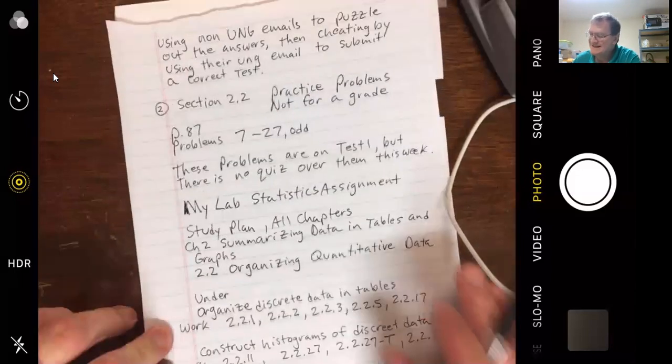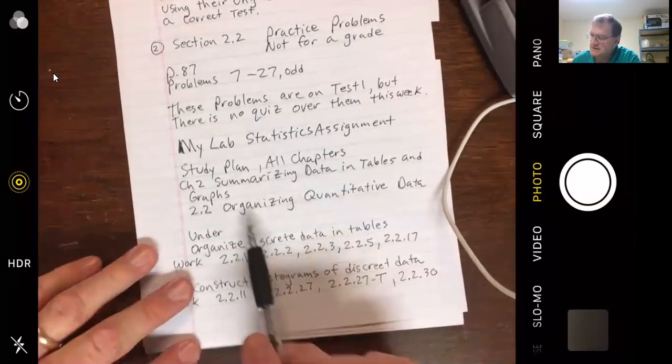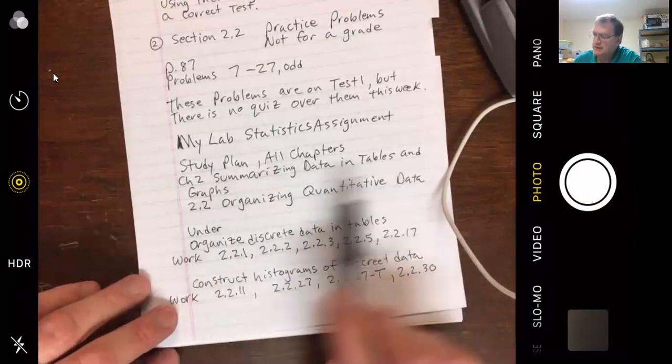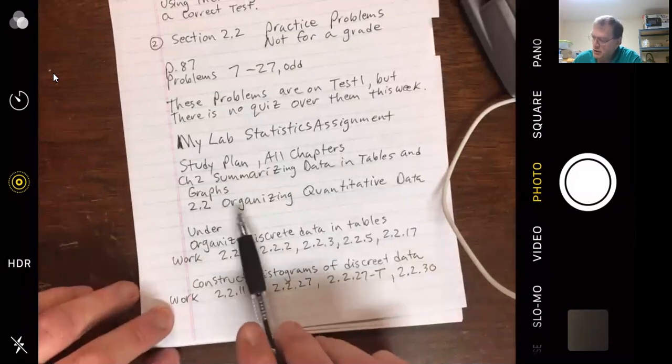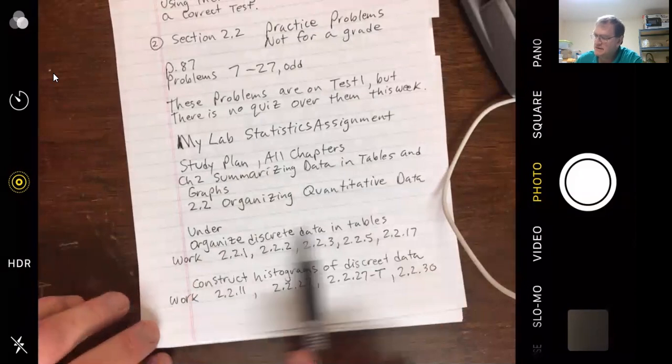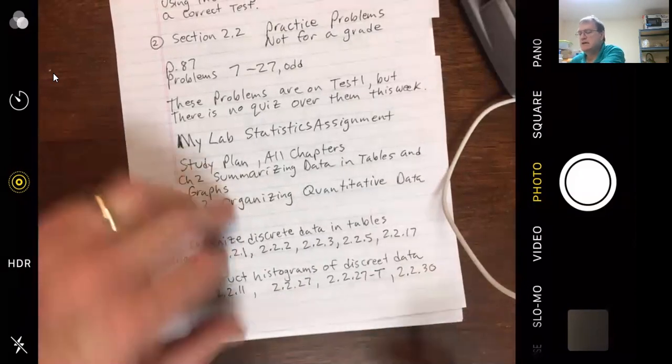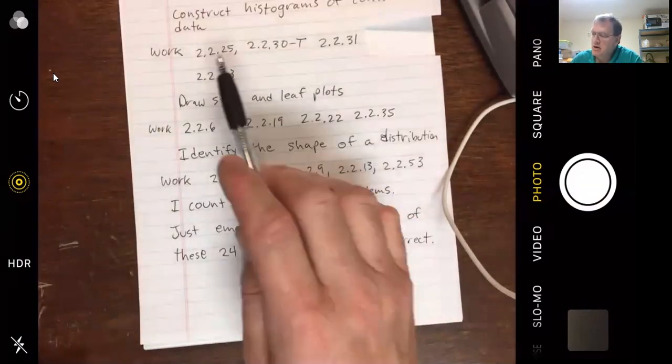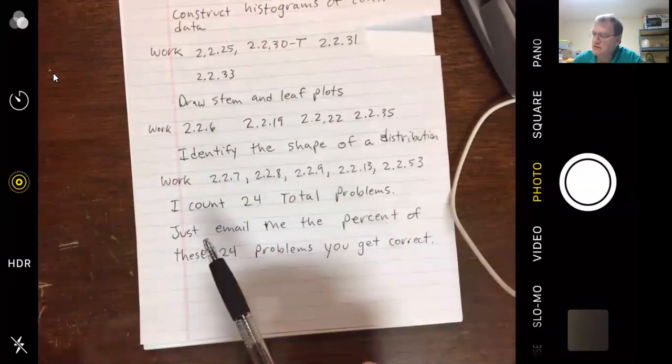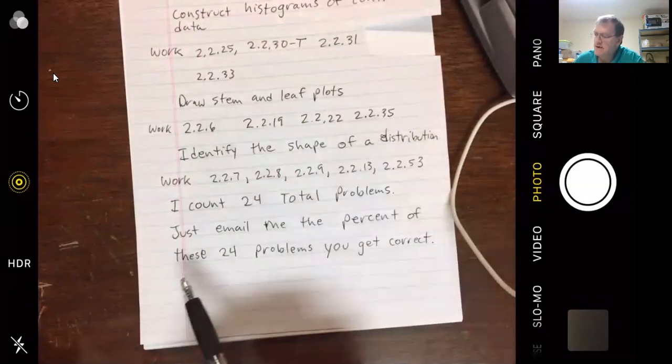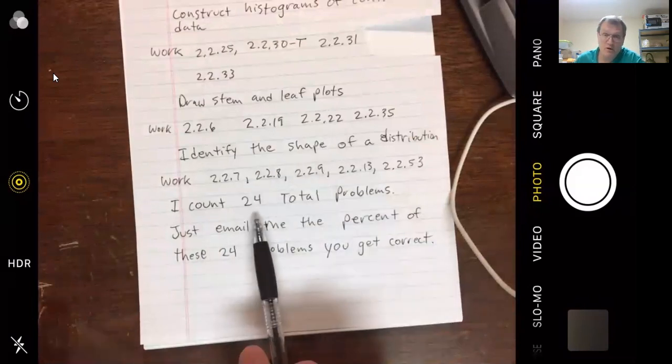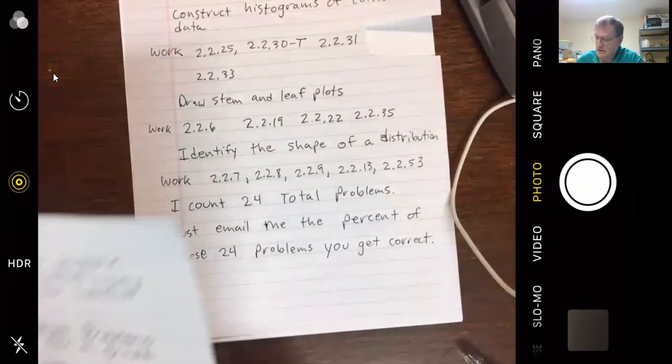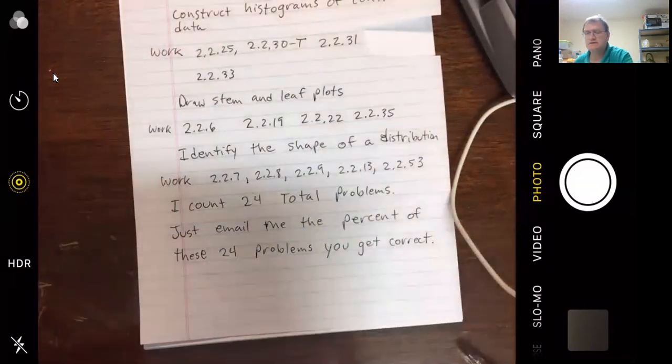Section 2-2 then, our practice problems, 7 to 27 odd. These problems are on test one, but there's no specific quiz over just them. In my lab statistics, I went through it last night and got the headings. You're under 2-2, all chapters, study plan, all chapters. Chapter 2 is summarizing data in tables and graphs. Under 2.2, organizing quantitative data. Then they have these headings and these are the exact problems numbers that I went through. I need to kind of go over what all these new things, different things mean.